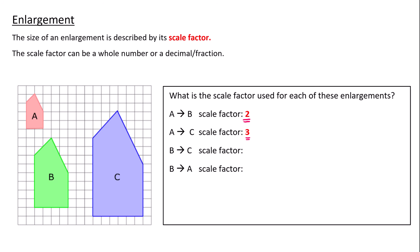Let's look at B to C. From B to C, B is 4 squares and C is 6. If it's not straightforward, you would divide. So 6 divided by 4 is 3 over 2, which is 1.5. The scale factor can be a decimal or a fraction — they're equivalent.